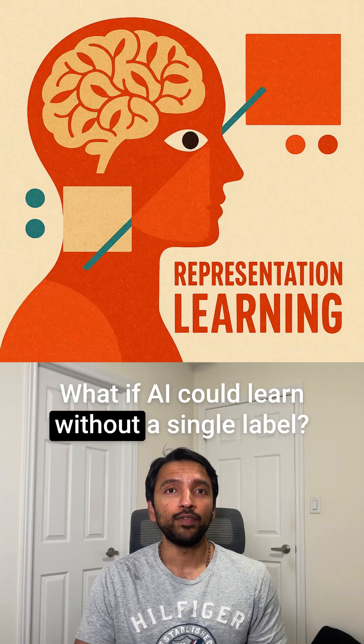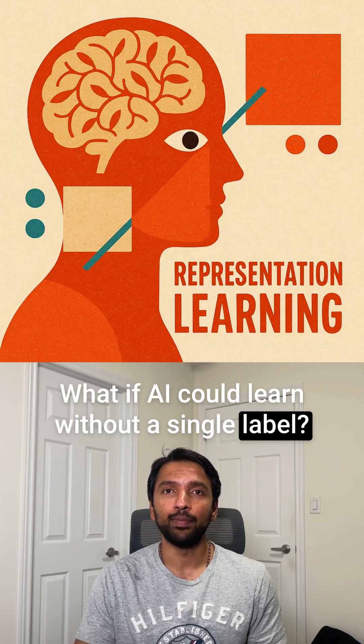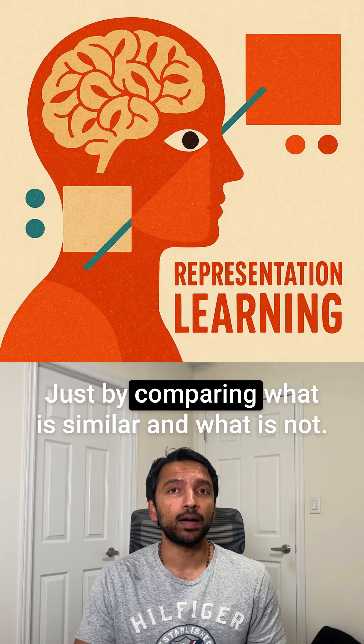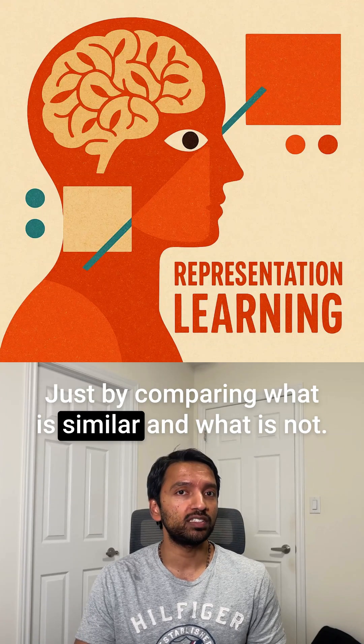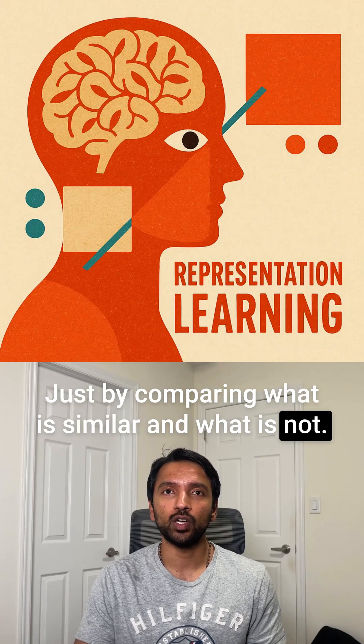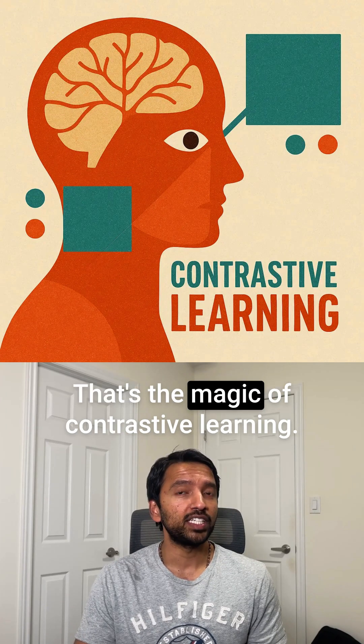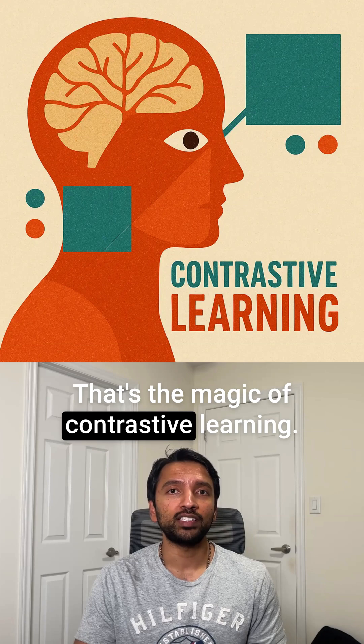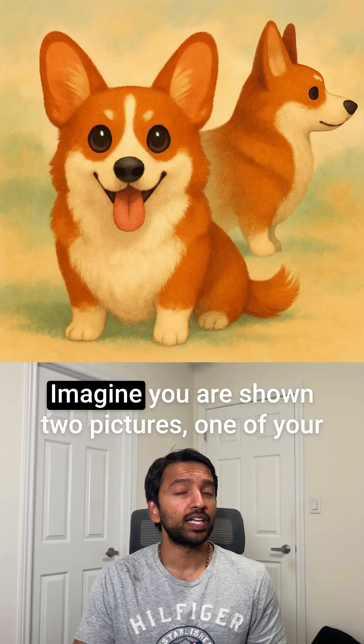What if AI could learn without a single label — just by comparing what is similar and what is not? That's the magic of contrastive learning.